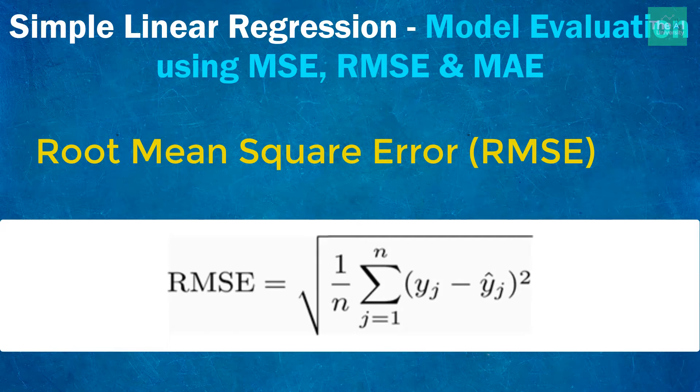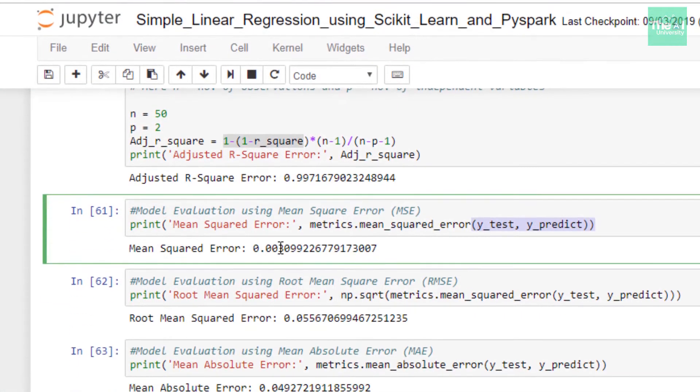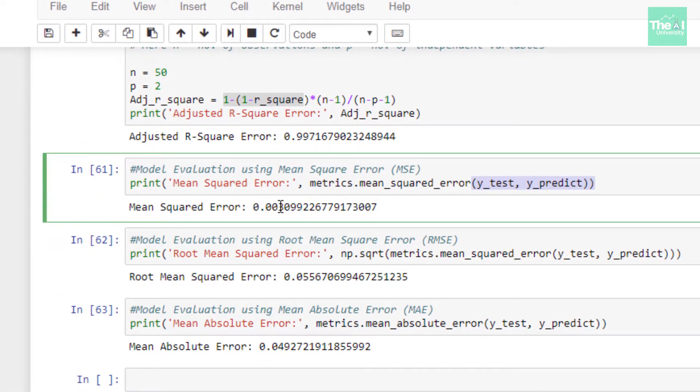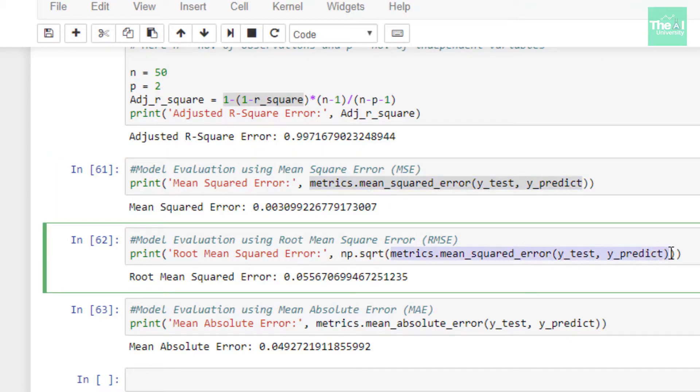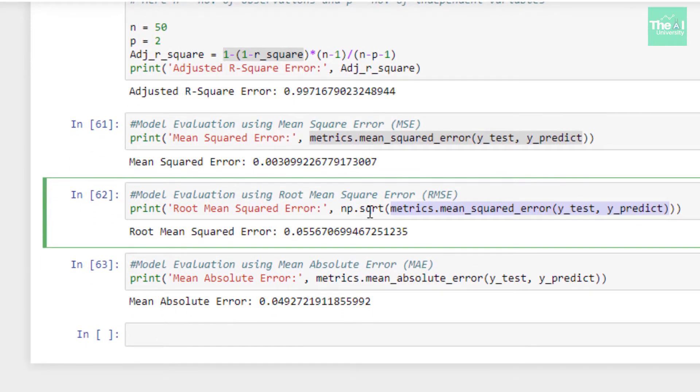We can calculate the RMSE by just taking the square root of mean square error, and hence I just copy-pasted the above value which is this one. So I copy and pasted it here, and then I just used this np.sqrt, NumPy's square root function, to take the square root of this complete value.